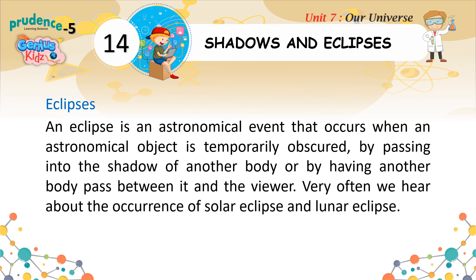An eclipse is an astronomical event that occurs when an astronomical object is temporarily obscured by passing into the shadow of another body, or by having another body pass between it and the viewer. Very often we hear about the occurrence of solar eclipse and lunar eclipse.